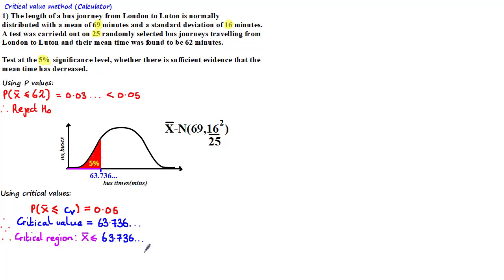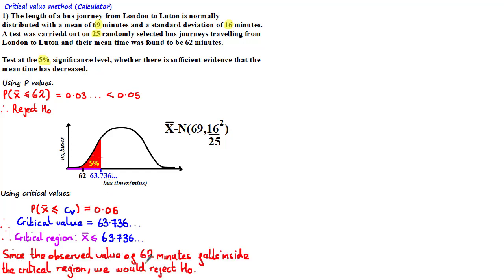So now we have our critical region. In order to decide whether to accept or reject the null hypothesis, we need to see where the observed value of the sample lies relative to the critical region. The observed value in this case was 62, which lies within the critical region, as you can see on the diagram. And therefore, we can say that since the observed value of 62 minutes falls inside the critical region, we would reject the null hypothesis. You will then need to complete this hypothesis test with a conclusive statement which relates to the context of the question.